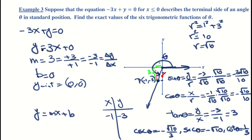Starting at any point on the line, we can go down three units and left one unit to get another point, or use a table and plug in x = -1 to get y = -3. This gives a point on the terminal side of angle theta that we can use to write all the trigonometric functions. Make sure you can run through this entire process completely on your own before moving forward.